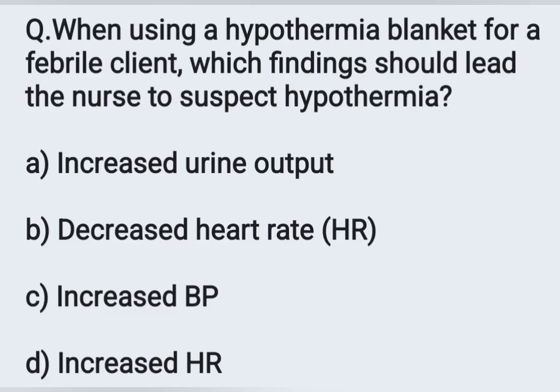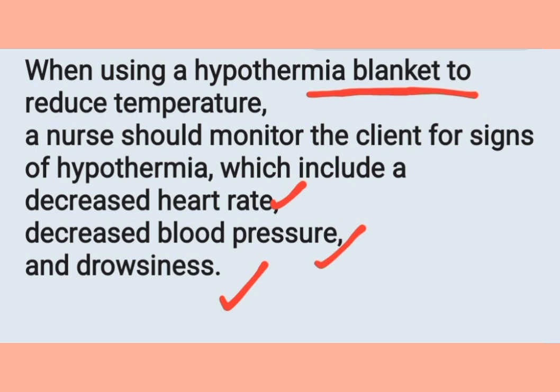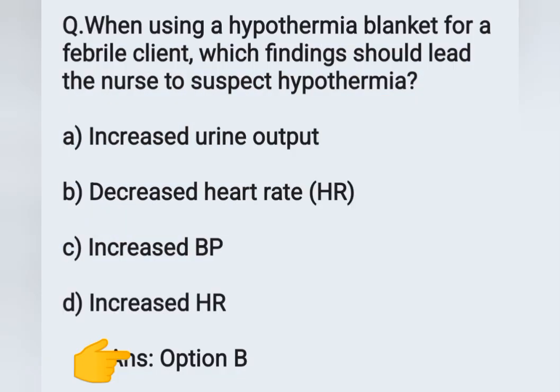The next question: when using a hypothermia blanket for a febrile client, which finding should lead the nurse to suspect hypothermia? Options: A - increased urine output, B - decreased heart rate, C - increased BP, D - increased heart rate. While using a hypothermia blanket to reduce temperature, a nurse should monitor the client for signs of hypothermia, which include decreased heart rate, decreased blood pressure, and drowsiness. Drowsiness occurs due to decreased heart rate and blood pressure, causing reduced cardiac output. Correct answer: option B, decreased heart rate.